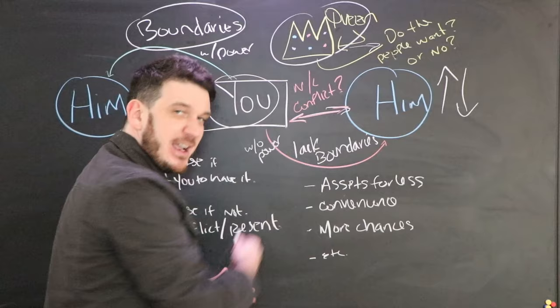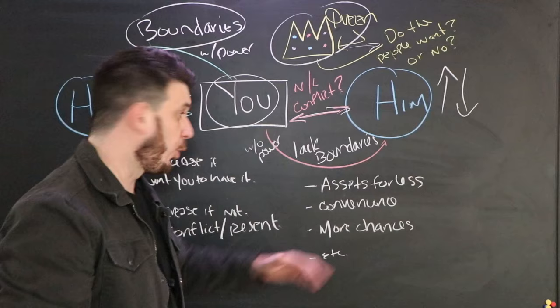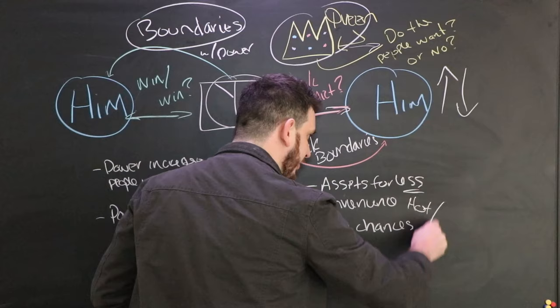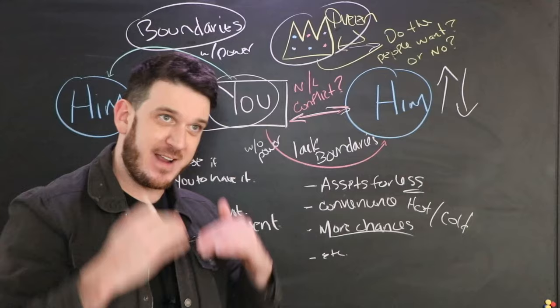A lot of times that is because in many situations a guy gets power by you having a lack of boundaries, a lack of power. When you lack boundaries, when he lacks respect for you, he gets the assets for free or at his convenience—hot and cold. He gets more chances than he deserves, you lower your barrier of entry.